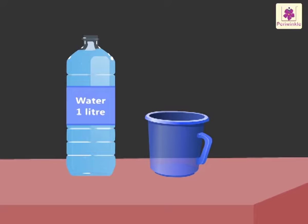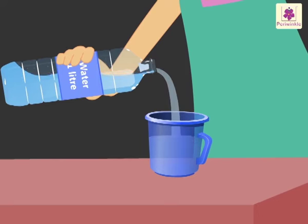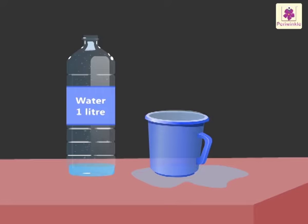Look, I have a bottle filled with water and an empty jar. Let's pour this water in the jar. Look, the water started overflowing and fell out of the jar. Hence, we can say that the capacity of the bottle is more than the jar. That is, the bottle can hold more water than the jar.